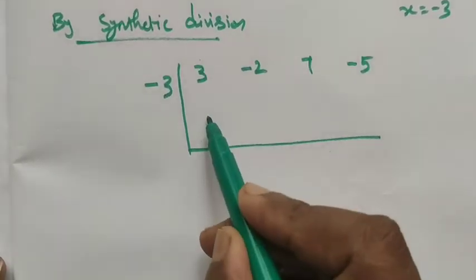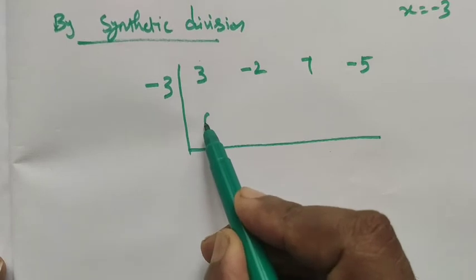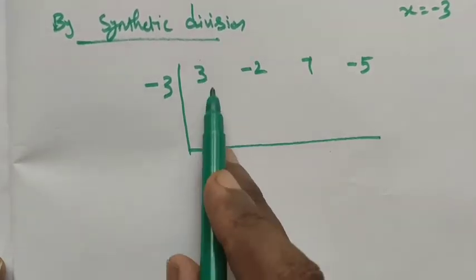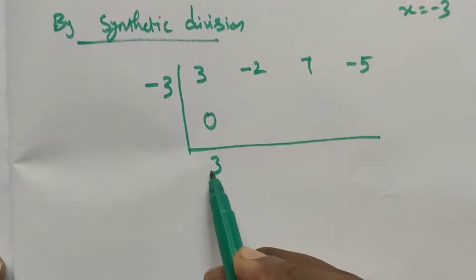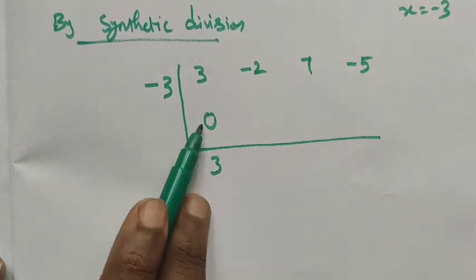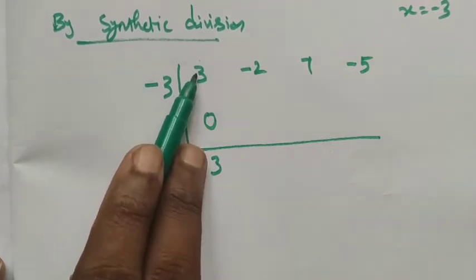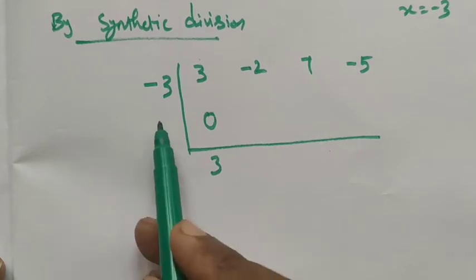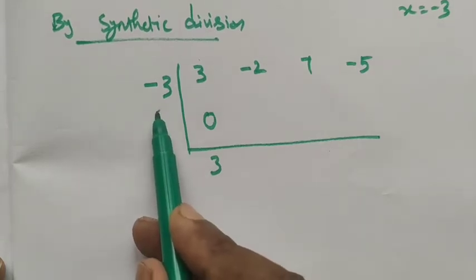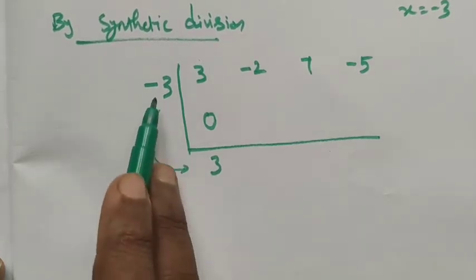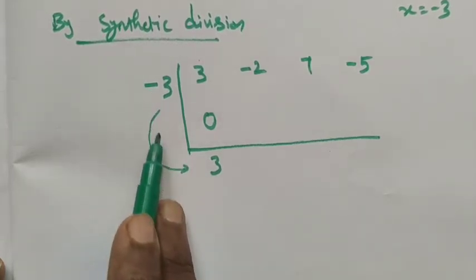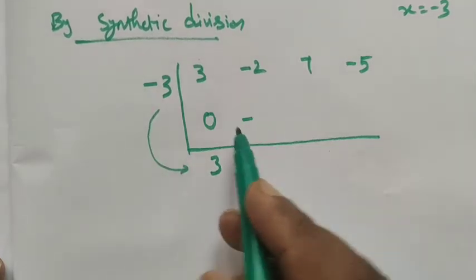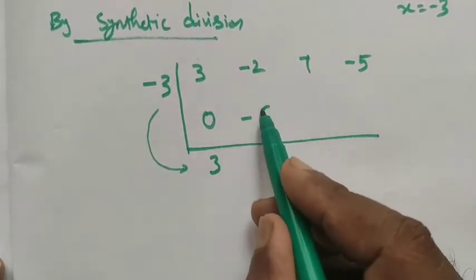The first term is always brought down as 0 addition: 3 + 0 = 3. Next, we multiply this term with the divisor number -3: (-3) × 3 = -9. We write -9 under the next coefficient.